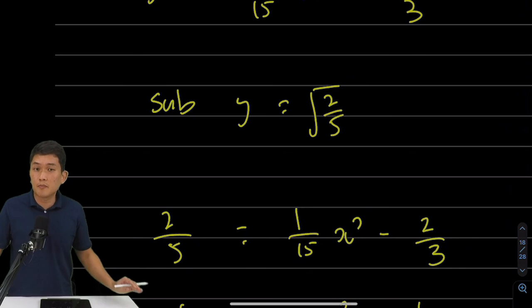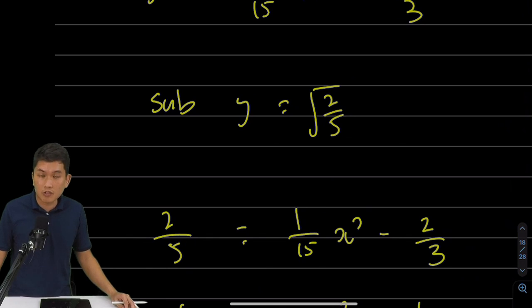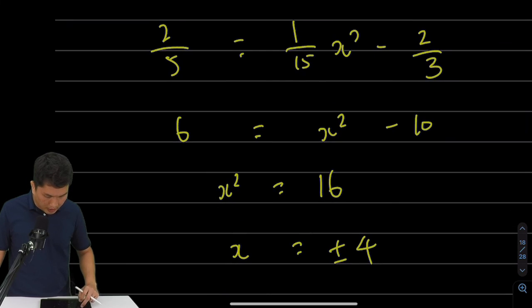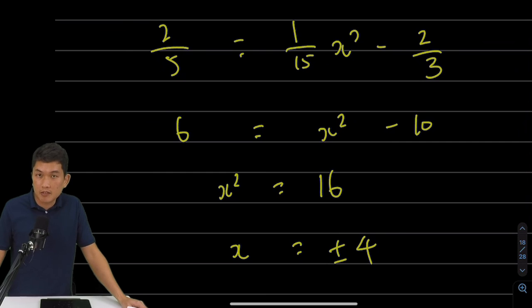Now, I don't know about you, but I hate to deal with fractions. So I'm going to multiply throughout by 15. That would eliminate all the denominators. Multiply by 15. This becomes a 6. This is x-square. This is a negative 10. x-square equals to 16. x equals to plus minus 4.